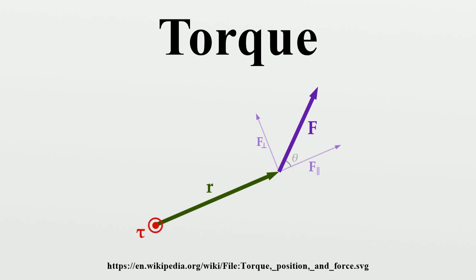Mathematically, torque is defined as the cross-product of the position vector of the point where the force is applied and the force vector, which tends to produce rotation. Loosely speaking, torque is a measure of the turning force on an object such as a bolt or a flywheel. For example, pushing or pulling the handle of a wrench connected to a nut or bolt produces a torque that loosens or tightens the nut or bolt.